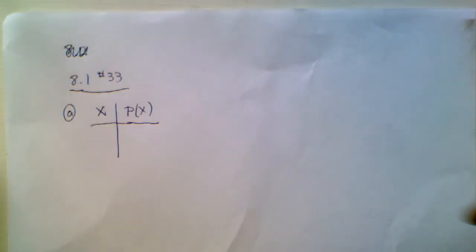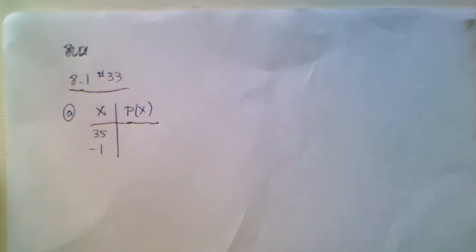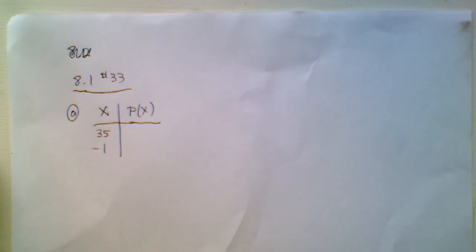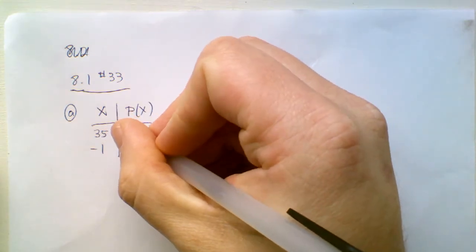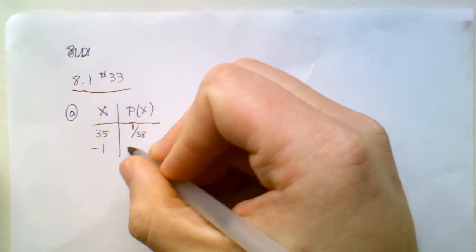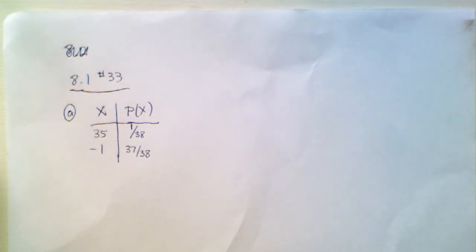So if you win, it says that you win $35. If you lose, you lose $1, so that means you earn negative $1. Those are the two possible values for x. Now we can figure out the probability corresponding to those values. If x is $35, that means you won. There are 38 slots in this game and you only get one guess, so the probability that you win is 1 in 38. The probability that you lose would have to be 37 out of 38 — the ball falls into any of the other 37 slots on the wheel.